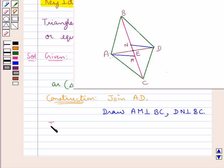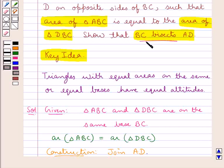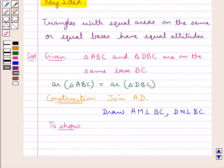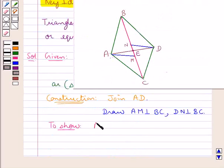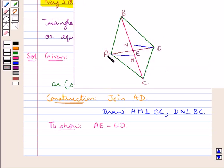We are supposed to show that BC bisects AD. That is, AE is equal to ED. From the key idea we have that triangles with equal areas on the same or equal bases have equal altitudes. And we know that we are given triangles ABC and DBC which are on the same base BC and they have equal areas.